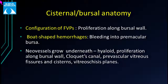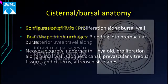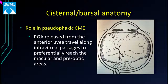Clinically, this cisternal anatomy may describe the configuration of fibrovascular proliferations in PDR, as proliferations have multiple scaffolds including the hyaloid, vitreous schisis planes, and the macular bursa. Bleeding into the premacular bursa may explain the shape of boat-shaped hemorrhages. These cisterns may also play a role in pseudophakic CME: prostaglandins produced in the anterior uvea may travel through these cisterns into the premacular space and cause macular edema.